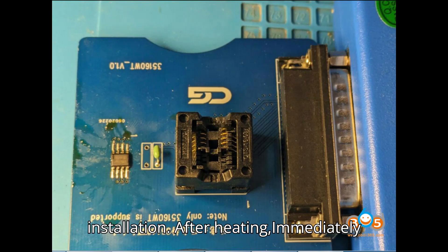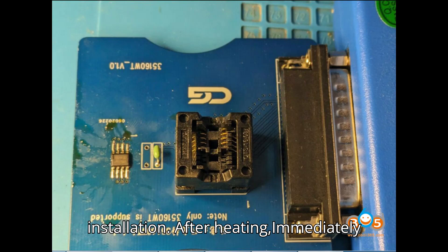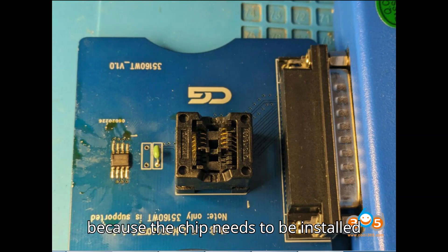Step 2: Immediate Installation. After heating, immediately install the adapter with the chip into the CG Pro device. This step is crucial because the chip needs to be installed while it is still warm from the heating process.